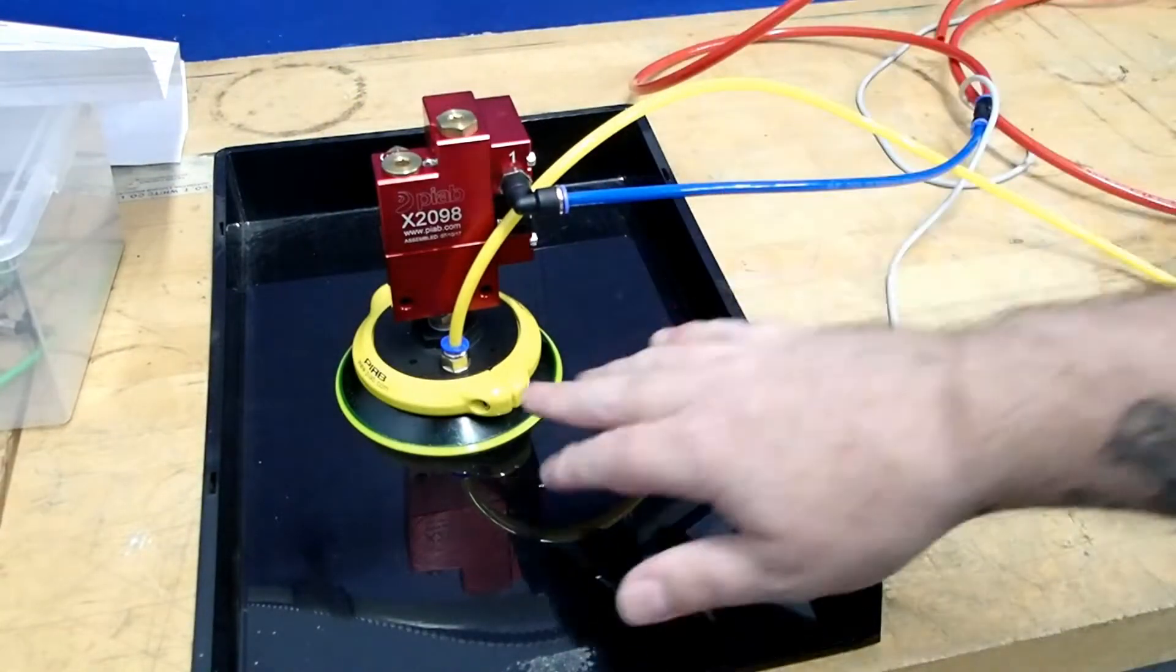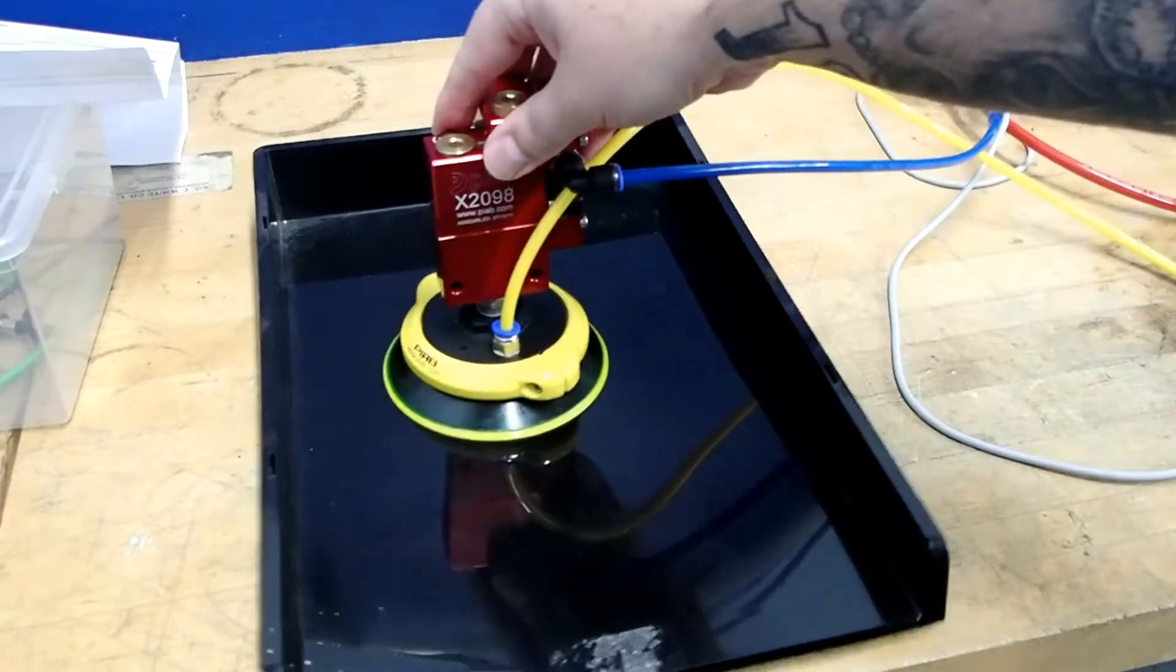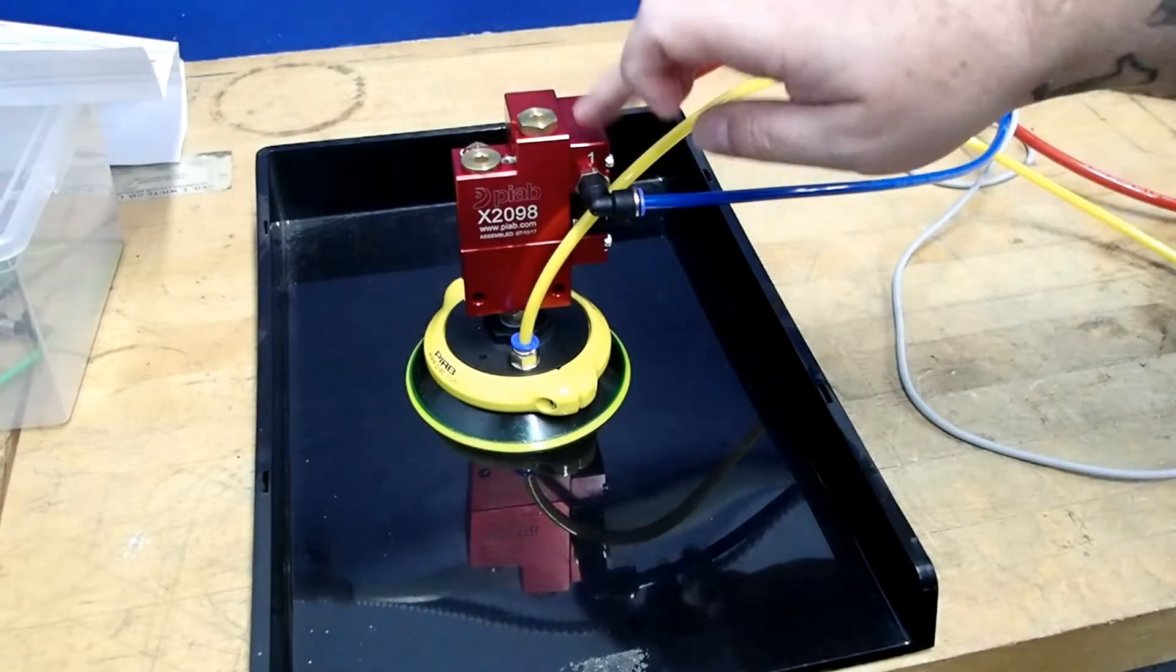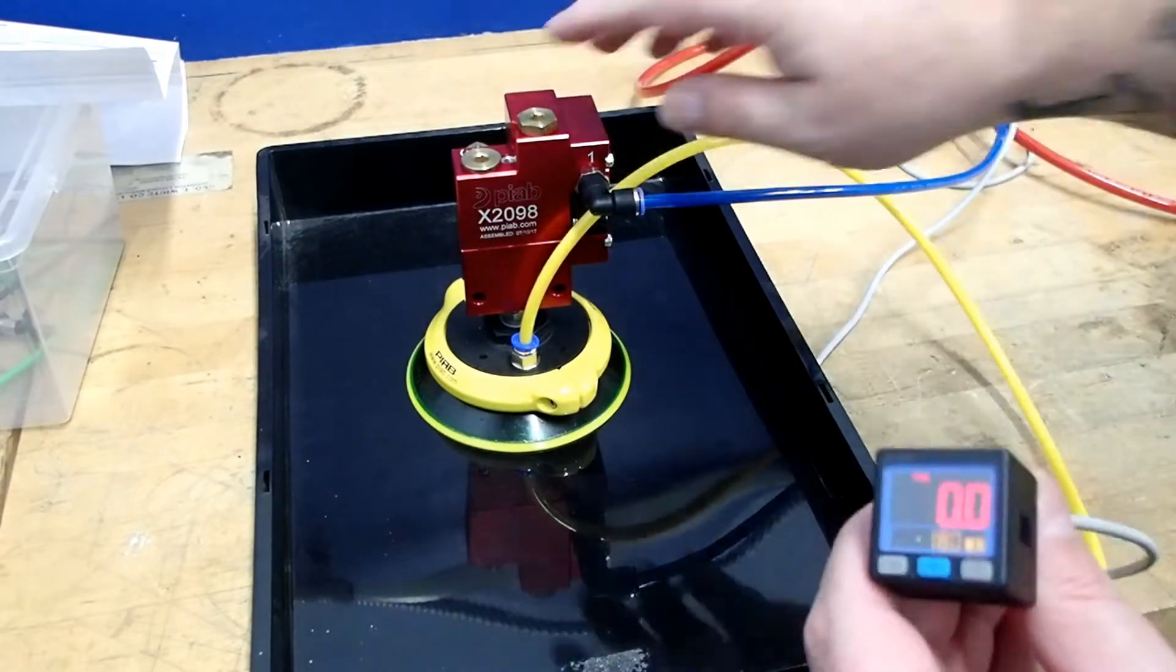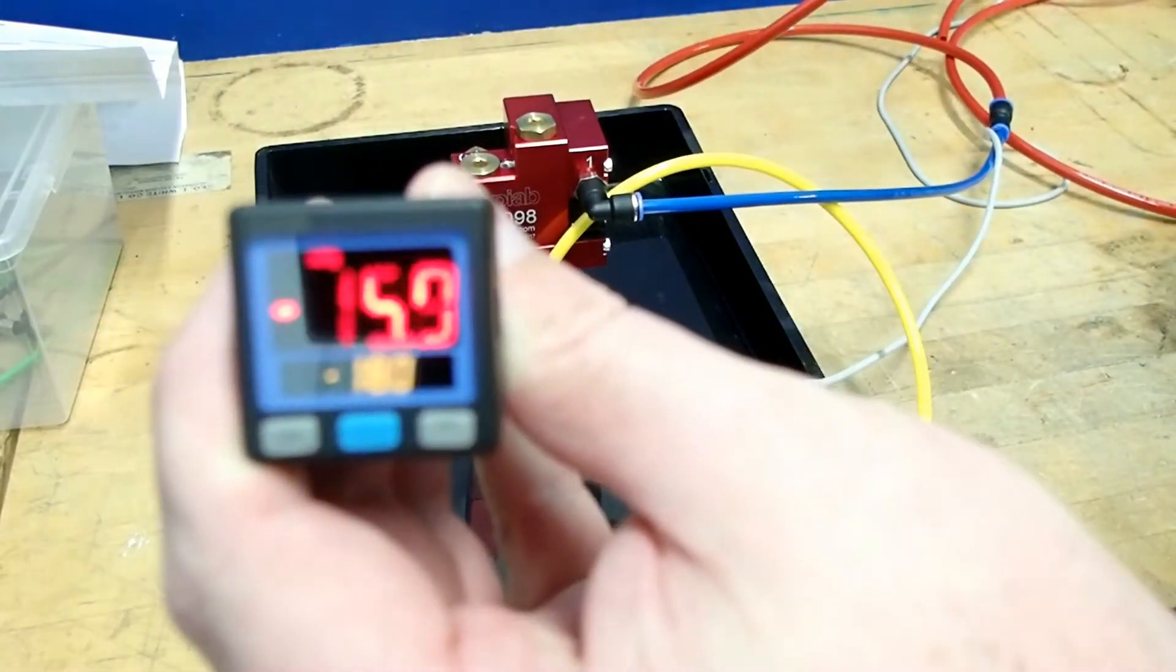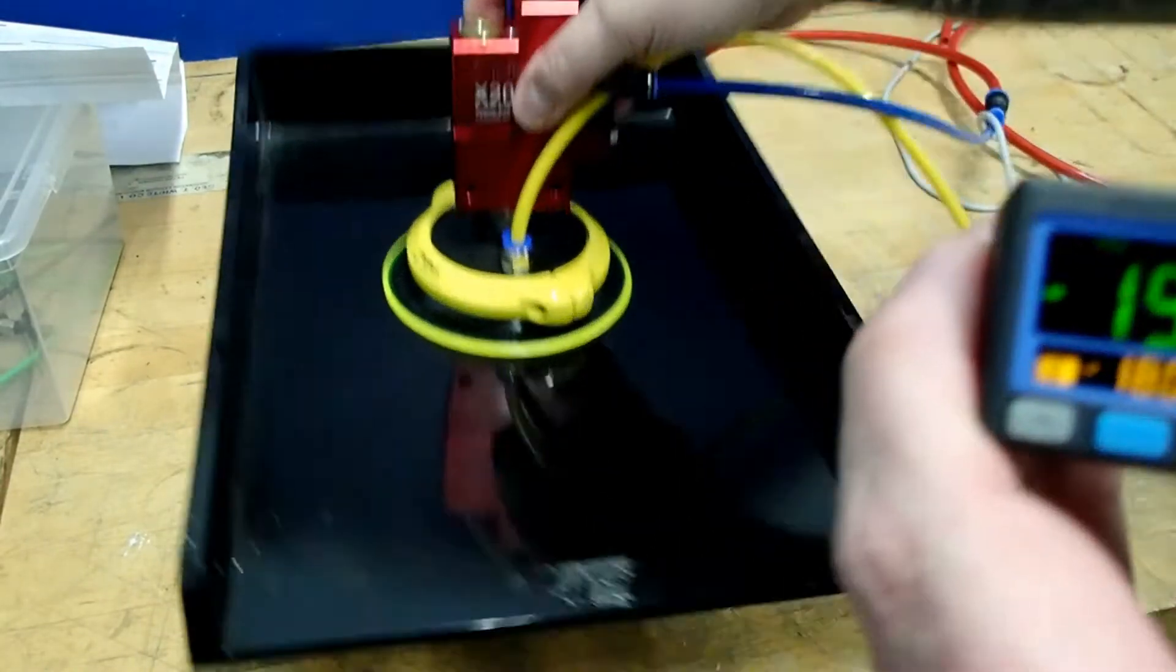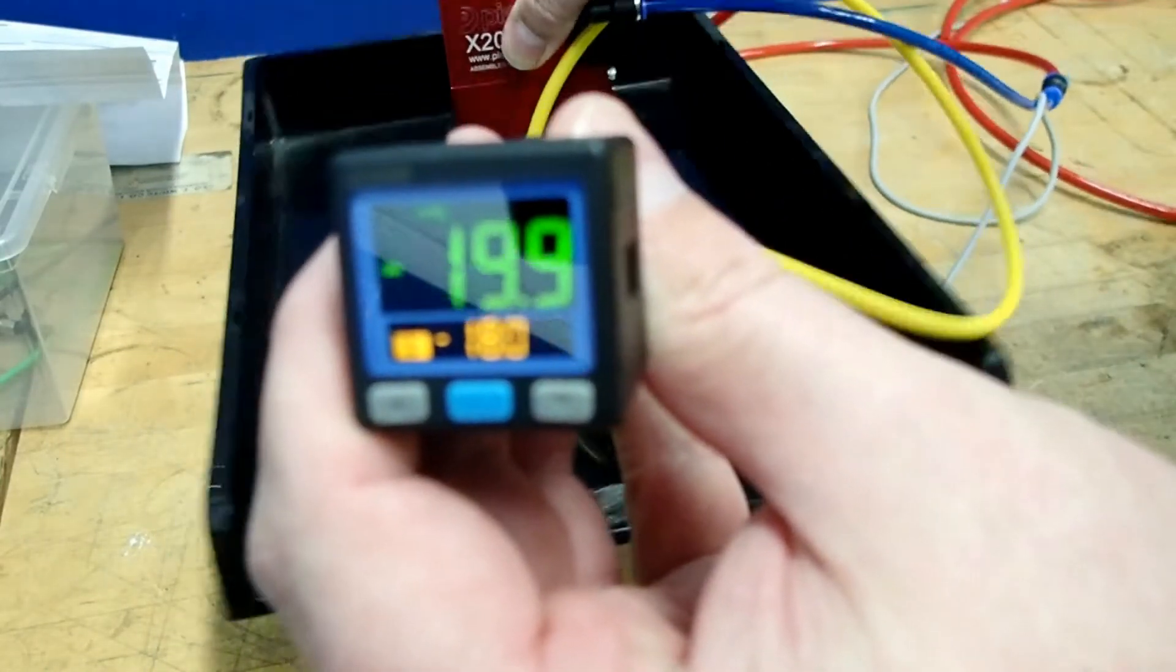So basically what's happening now is that we're achieving everything that we require for this unit to operate. I'll go through once again quickly just to show you how fast this unit will energize. And there we go, not wasting any air. Air is off and we're maintaining a good hold of the product.